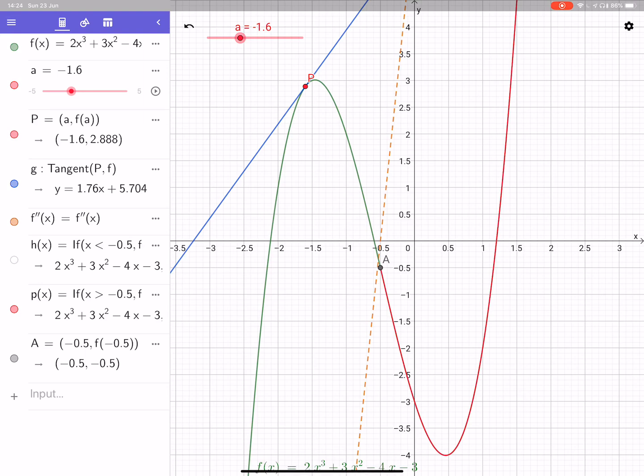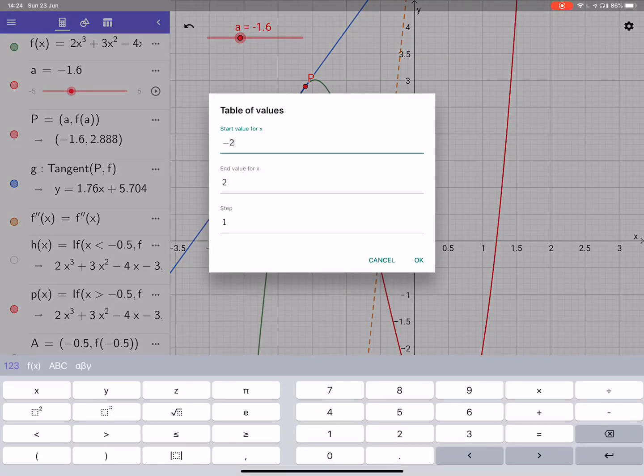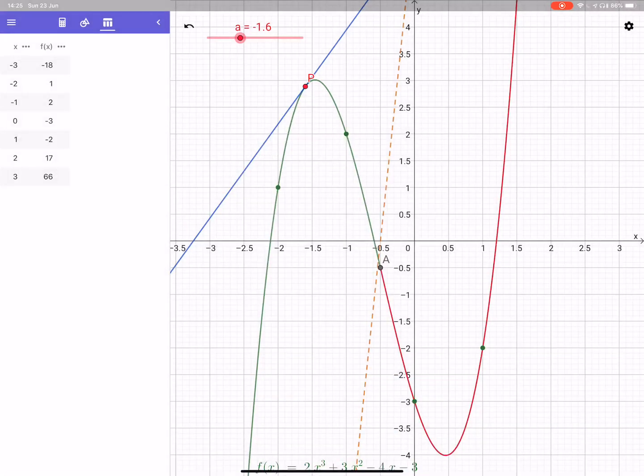Just one last thing, if you go back to the original curve and we go to table values, and let's start from minus three to three, we press okay. That gives you a table of values for the original curve from minus three going up in steps of minus two, which is also a useful feature of GeoGebra.